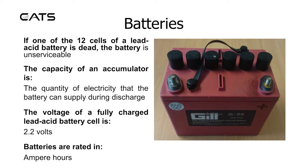If one of the 12 cells of a lead acid battery is dead, the battery is unserviceable. The capacity of an accumulator — an old name for a battery — is the quantity of electricity that the battery can supply during discharge. The voltage of a fully charged lead acid battery cell is 2.2 volts. Batteries are rated in ampere hours.